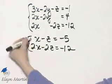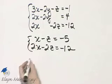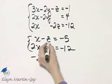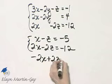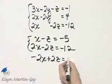Let me multiply the first equation through by negative two. X times negative two is negative two x. This term times negative two, that's plus two z, and this times negative two is equal to 10.